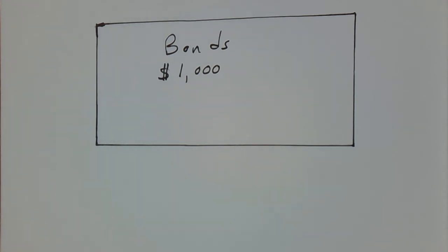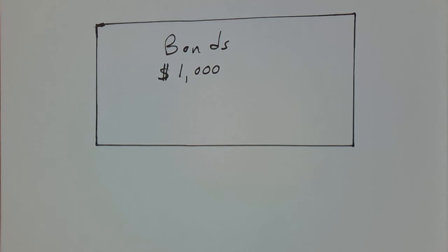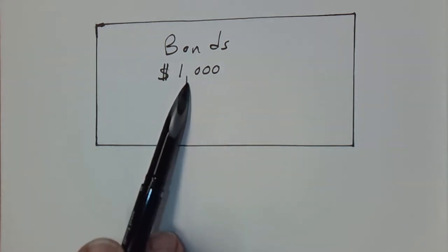Now, you could get the bond issued in a physical certificate. Sometimes they'll charge you some money to do so. Oftentimes the bond is just represented electronically, as a lot of securities are nowadays. But let's pretend we have a physical certificate just for the purpose of this. On the face of it, it would tell you that the par value of this bond is $1,000.